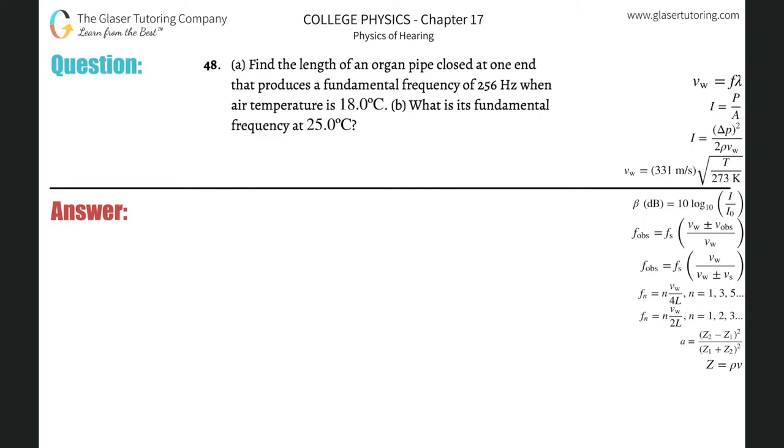Number 48, letter A. Find the length of an organ pipe closed at one end that produces a fundamental frequency of 256 hertz when air temperature is 18 degrees Celsius. First check out number 42. I went through a general overview of this topic, talking about the formula.